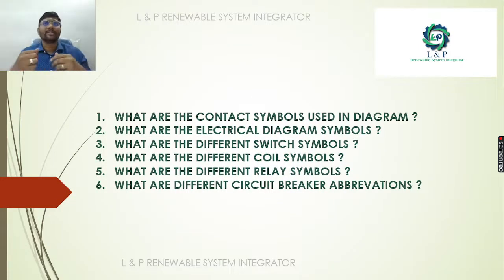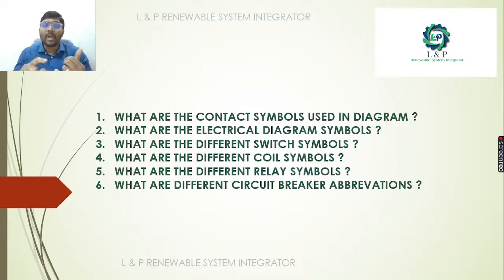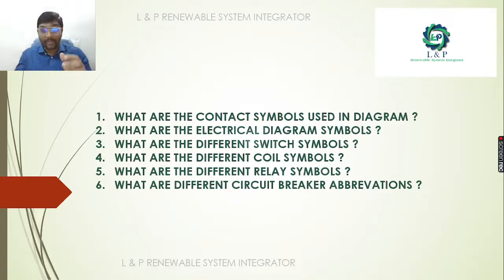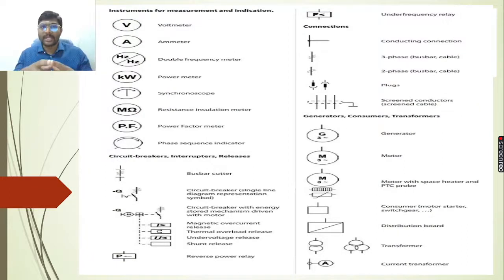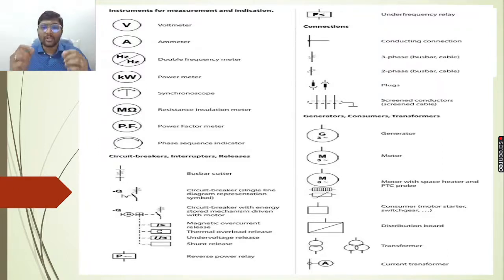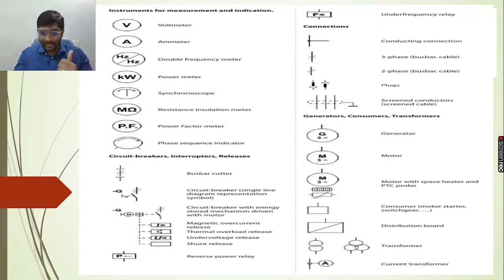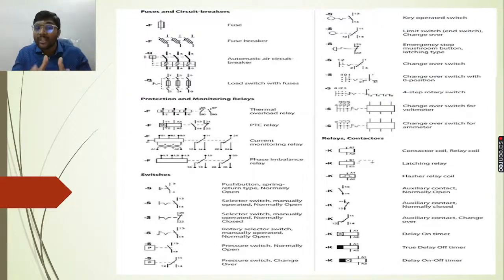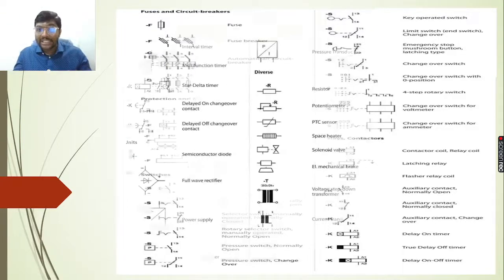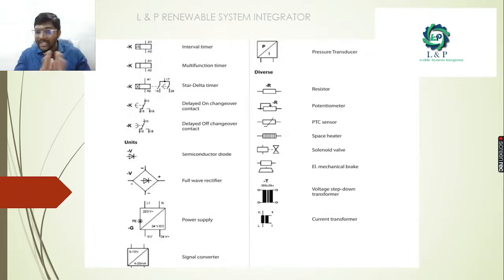We will study what contact symbols are used in diagrams, what the electrical diagram symbols are, the different switch symbols, coil symbols, relay symbols, and the different circuit breaker abbreviations. In our drawings we use many symbols, short forms, and abbreviations. For any doubts regarding instrumentation, measurement, indication abbreviations, circuit breakers, interruptors, releases, generators, consumers, transformers, connections, fuses, protection, monitoring, release switches, contactors, and other units, you can refer to this part of the video.